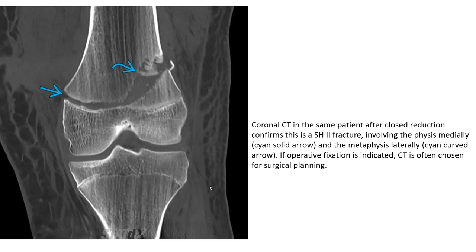This is the example of the Salter-Harris fracture Type 2, where the fracture goes through the physis and involves the metaphysis.